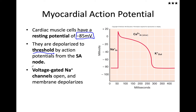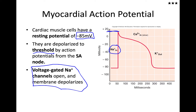That depolarization is due to voltage-gated sodium channels — very similar to skeletal muscle. The voltage-gated sodium channels open and sodium rushes into the cell, giving us that influx. At about positive 20mV, those voltage-gated sodium channels close, again similar to skeletal muscle. At this peak, that's where we get closure of the voltage-gated sodium channels and the opening of the voltage-gated potassium channels.